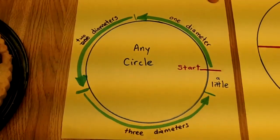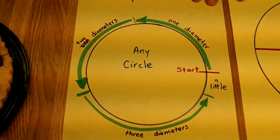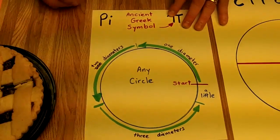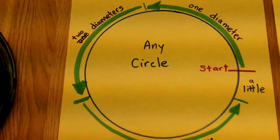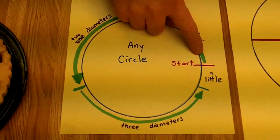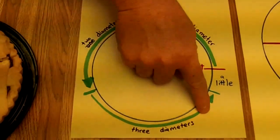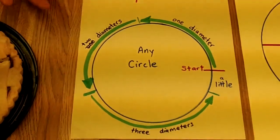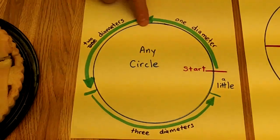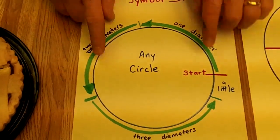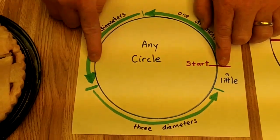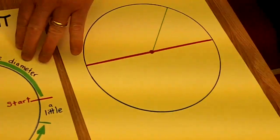Now, the ancient Greeks, after measurements of probably hundreds or thousands of round objects, they noticed a pattern. Whenever they would measure around a circle, they always found that the circumference was about three and a little bit times each diameter.